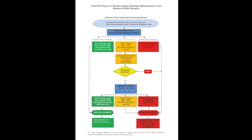From the yellow part of the pathway, where the saturations are 90 to 94% or the difference is greater than 2%, this requires a clinical assessment by the neonatal team. If there are clinical symptoms identified then this will move on to the red part of the pathway. If there are no other symptoms identified on clinical assessment, there will be a repeat screen 2 hours after the initial screen. If either of the readings are between 90 and 94% or there's a difference greater than 2% following the 2 hour period, this moves on to the red part of the pathway.